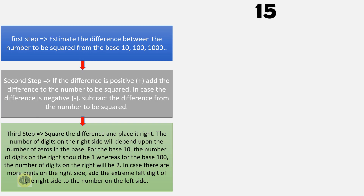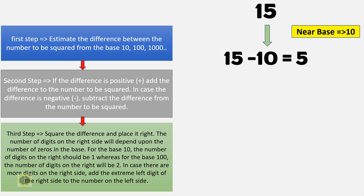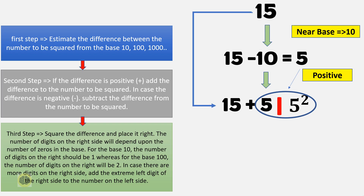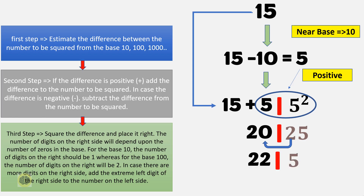Let's find the square of 15. The base nearer to 15 is 10. The difference is 15 minus 10, which equals 5. Since the difference is positive, add the difference to the number to be squared — this becomes the left part of the solution. Square the difference and place it on the right. Since the base is 10, there should be 1 digit on the right, but here there are two digits. So add the extreme left digit of the right side to the left side — 2 is added, resulting in 22. Combining the numbers, the square of 15 is 225.